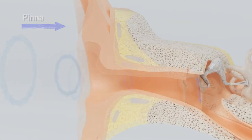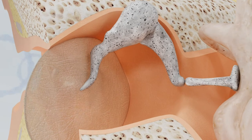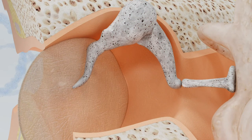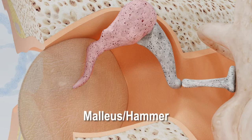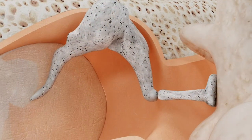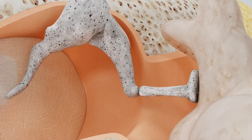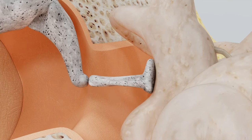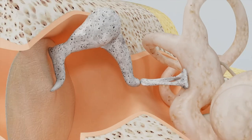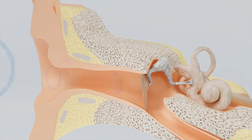The middle ear begins at the eardrum. The eardrum is attached to a chain of bones called the ossicular chain. The individual bones in the ossicular chain are called the malleus or hammer, the incus or anvil, and the stapes or stirrup bone. When the sound waves hit the eardrum, the drum vibrates the chain of bones in this air-filled cavity, and the signal is sent to the inner ear by the vibrating bones.